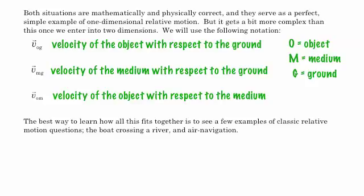Certainly what you'll see in this lesson is that we're using a medium such as air if we're talking about an airplane, or we're using water if we're talking about boats. But it doesn't necessarily have to be a medium. It could be object one and object two, the velocity of one object with respect to the ground, the velocity of a second object with respect to the ground. And then the final velocity would be the velocity of the object with respect to each other. But the best way to learn how all of this fits together is to look at a few examples of classic relative motion questions, the boat crossing the river or air navigation. And this really is pretty much a review of classic relative motion questions from introductory physics.